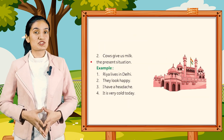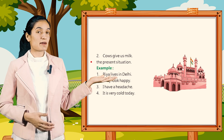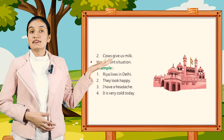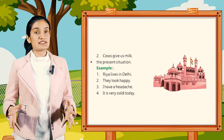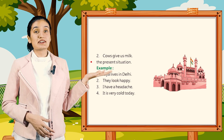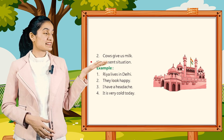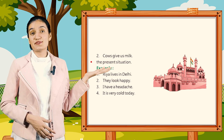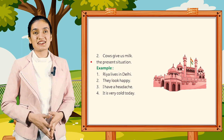The present situation. Example: Rhea lives in Delhi. They look happy. I have a headache. It is very cool today.